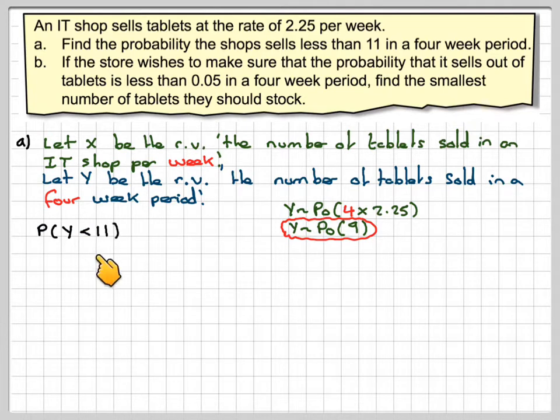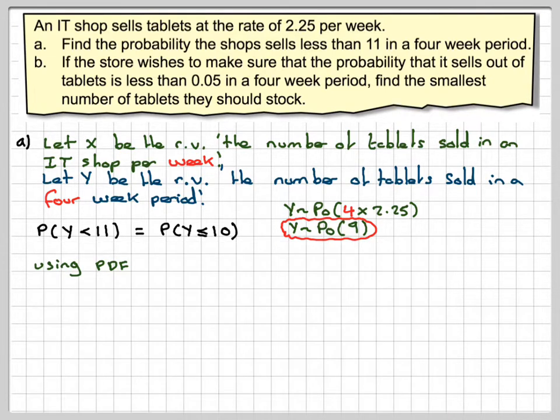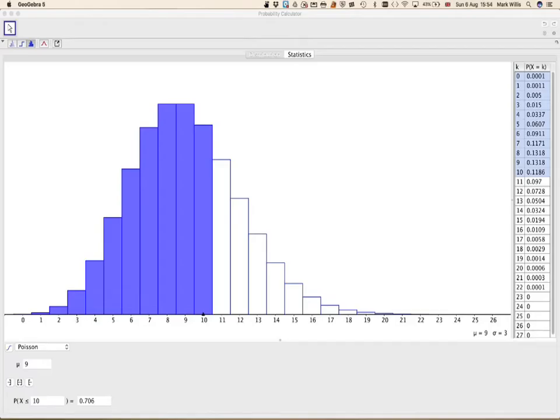We require the probability that Y is less than 11. So that's equal to the probability Y is less than or equal to 10. Using the PDF, using GeoGebra, that's the PDF.